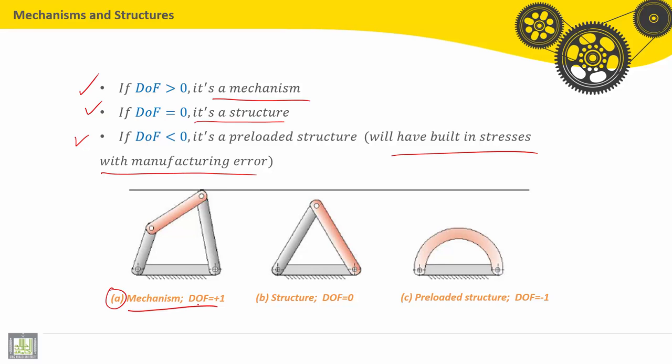The first example is a mechanism. Degree of freedom equals 1. So this system can be driven with one rotation, for example, from here.